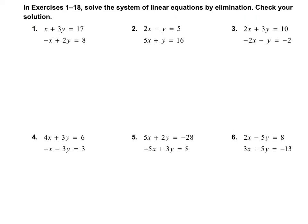So when we solve by elimination, we first need to see if one of the variables is going to disappear if we add or subtract the equations together. I notice that we have x minus x, which would cancel out if we added these two equations together. So I'm going to add them. The x's cancel, and we're left with 3y plus 2y is 5y, and 17 plus 8 is 25.